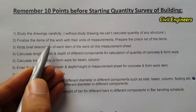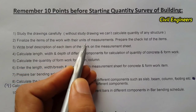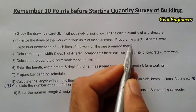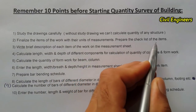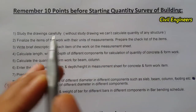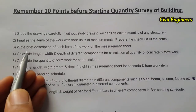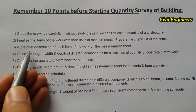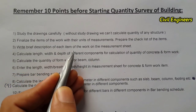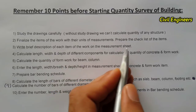The second point is to finalize the items of work with their units of measurement and prepare a checklist of items — this is also an important point. The third point is to write a brief description of each item of work on the measurement sheet.